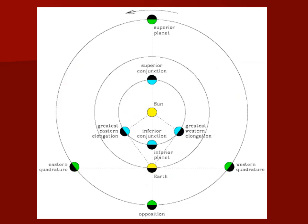This diagram also shows the side of each planet that is lit up at each alignment. At inferior conjunction you're seeing the dark side of the planet, so you don't see much. Right before or after inferior conjunction you'd see a tiny crescent. At greatest elongation the planet is close to half lit. At superior conjunction it would look full, but it's far away so it appears small in the sky. This is actually key evidence another astronomer used to show planets orbit the sun rather than Earth. For a superior planet, at opposition it looks full, and at quadrature it looks gibbous.